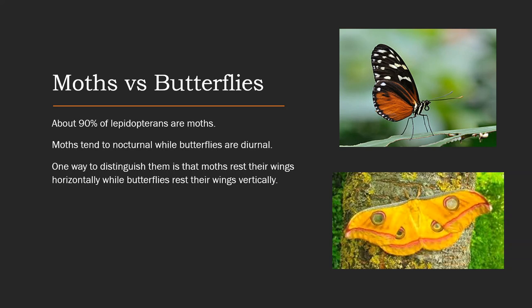Now, moths versus butterflies. About 90% of Lepidoptera are moths, so the majority of them are going to be moths. Moths tend to be nocturnal, while butterflies are what we call diurnal, meaning they stay out during the day. One way to distinguish them is their wings at rest — butterflies like to put their wings up or have them vertical, whereas moths like to have their wings spread out. You can see here this butterfly has his wings up, and the moth has its wings spread out.